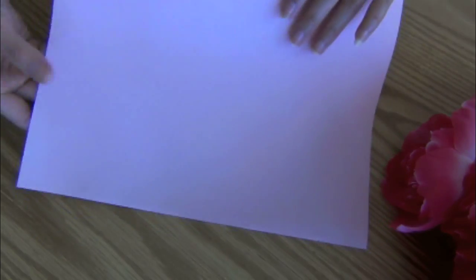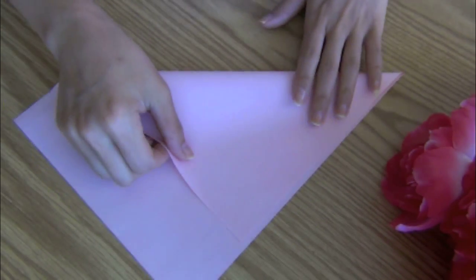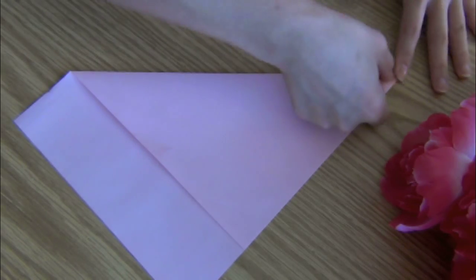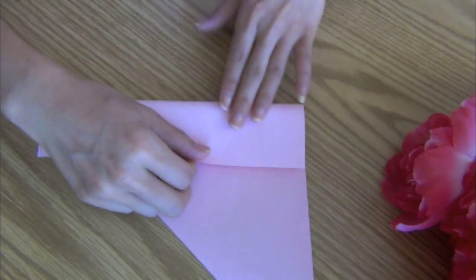Alright, let's get to it. I'm starting out using a color printing paper. I need a perfect square, so I fold one side of the paper to the opposite and remove the excess paper.